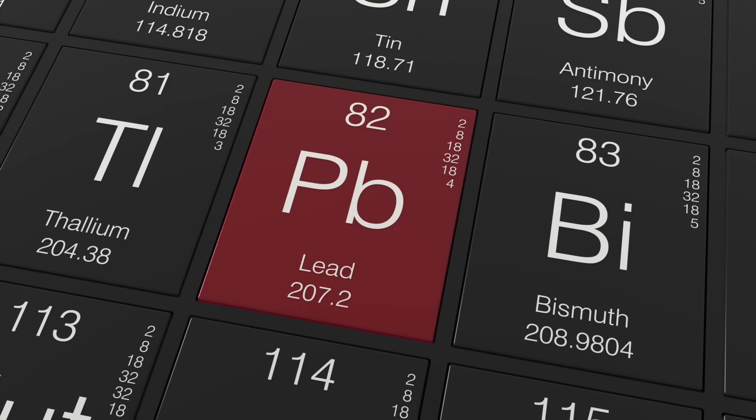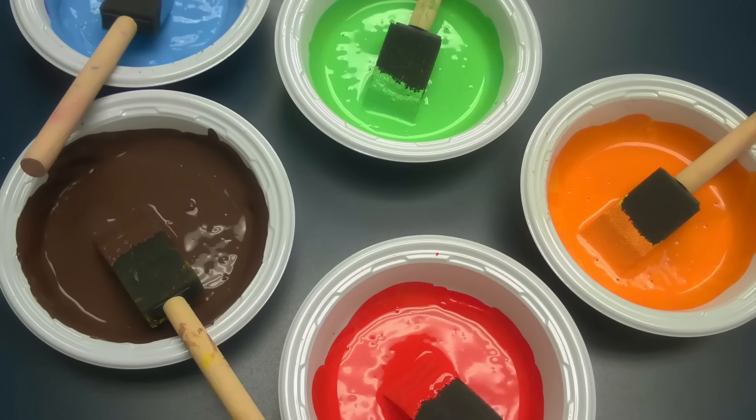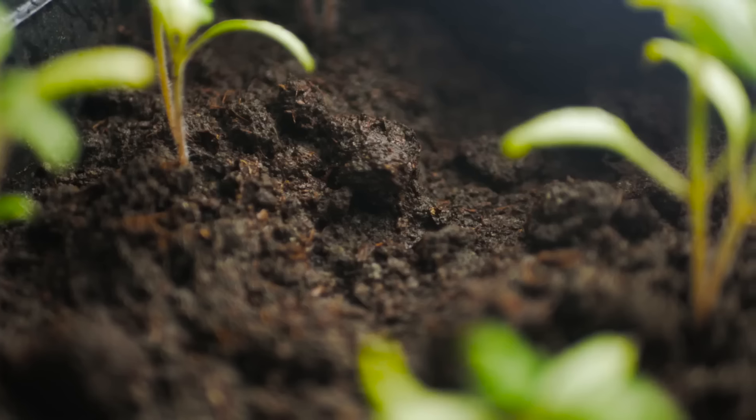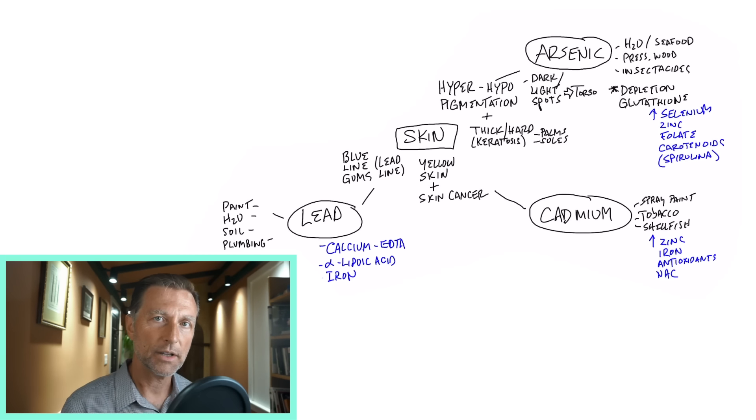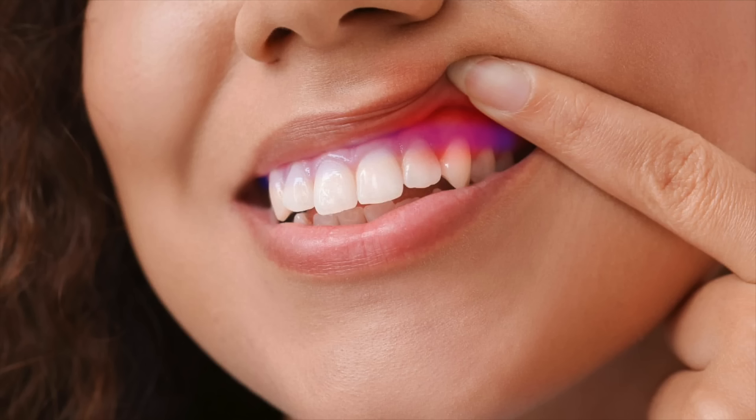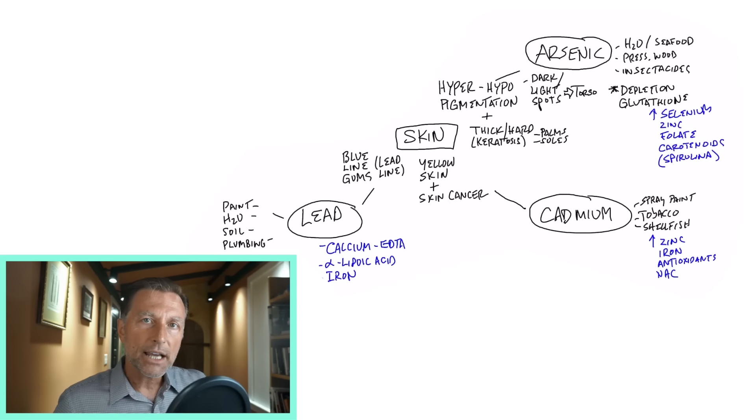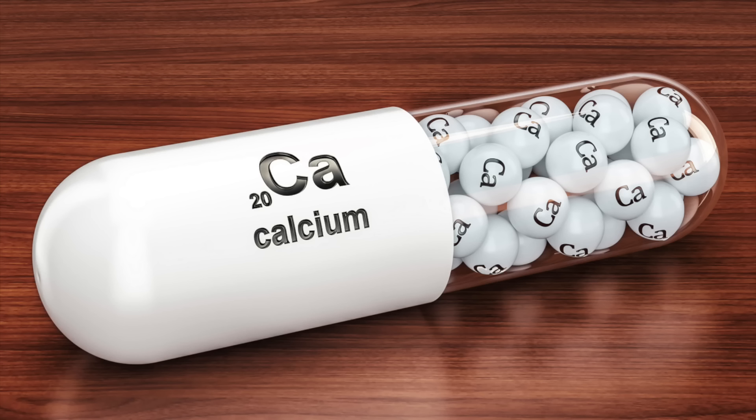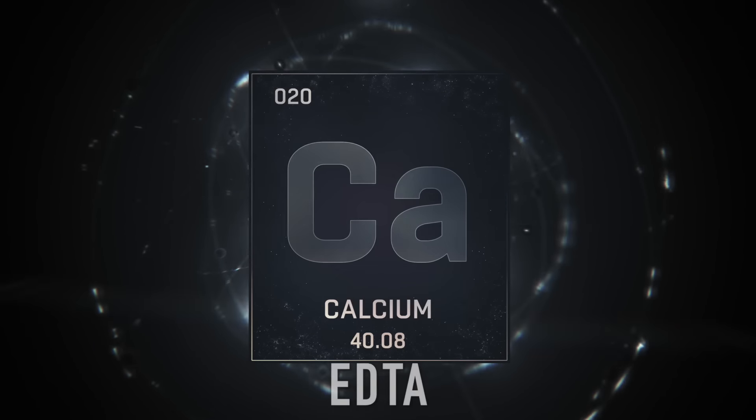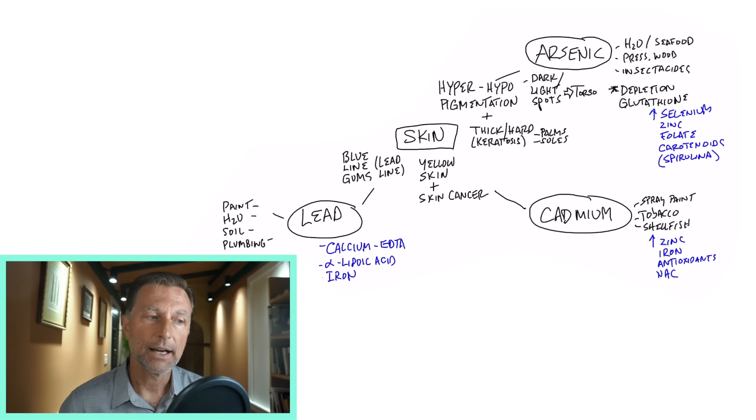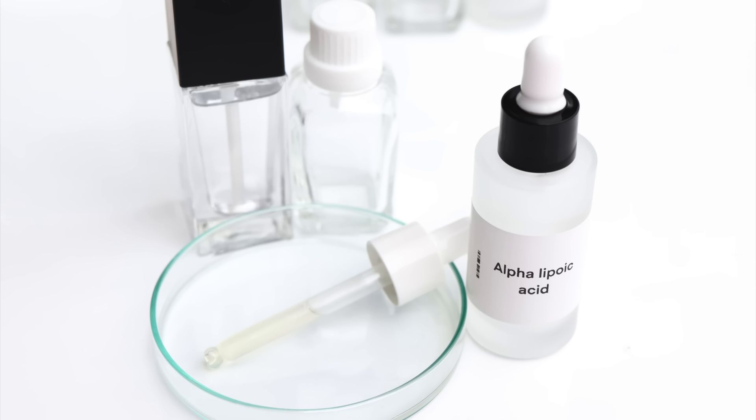Let's go to lead. Lead is in paint or used to be in paint. It can be in our water supply and in our soils. But the distinct indication that you might have lead poisoning is a blue line on your gums in your mouth - it's called a lead line. Some things that can protect you against lead include having enough calcium in the body, having enough iron, a remedy called calcium EDTA which is a chelator that can help pull these heavy metals out, and alpha lipoic acid.